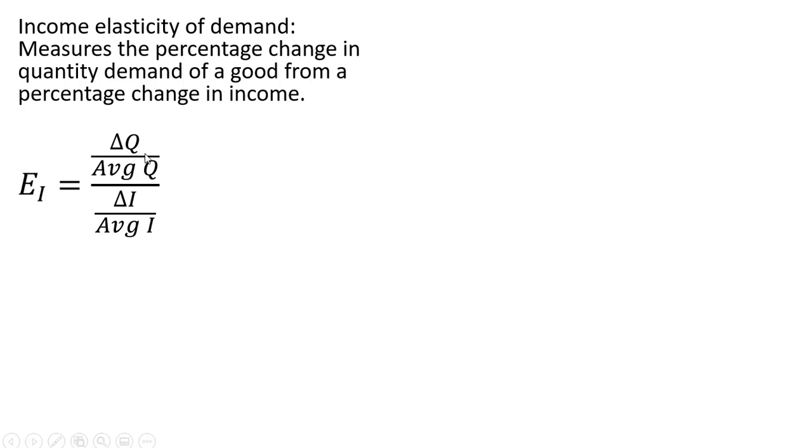Here is the basic formula. We got the change in quantity divided by the average quantity, and that is all going to be divided by the change in income divided by the average income. Let's do an example.